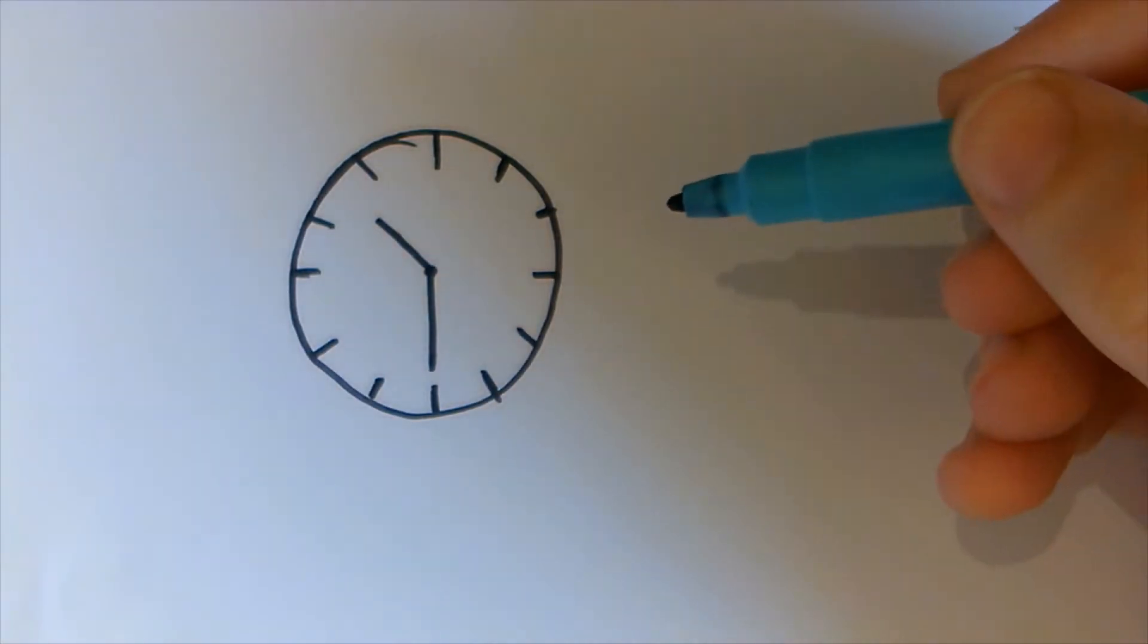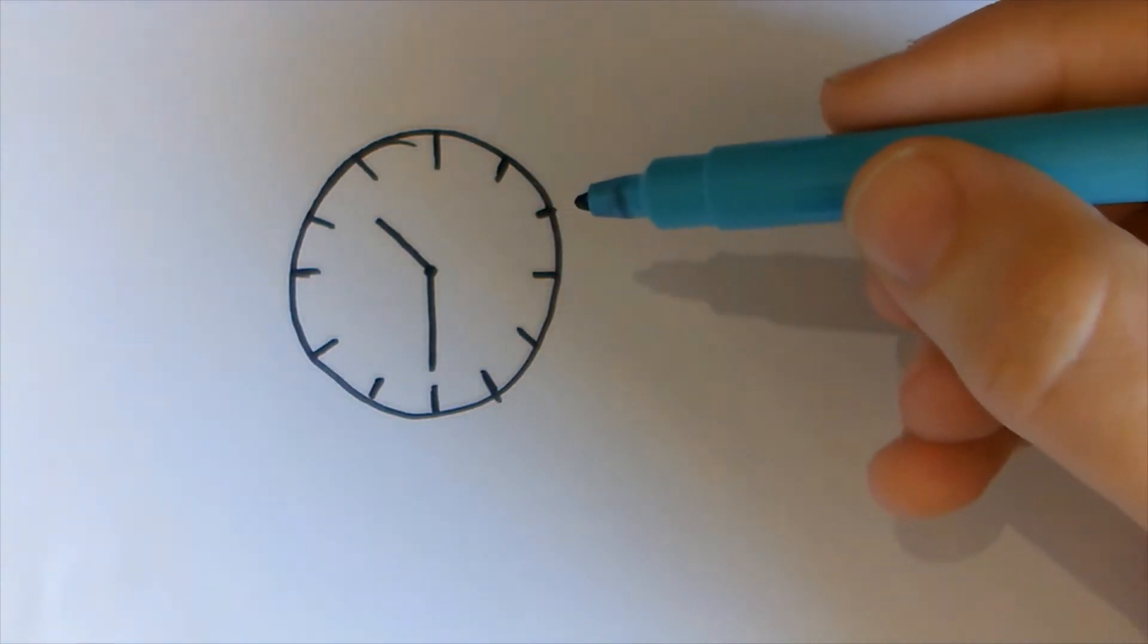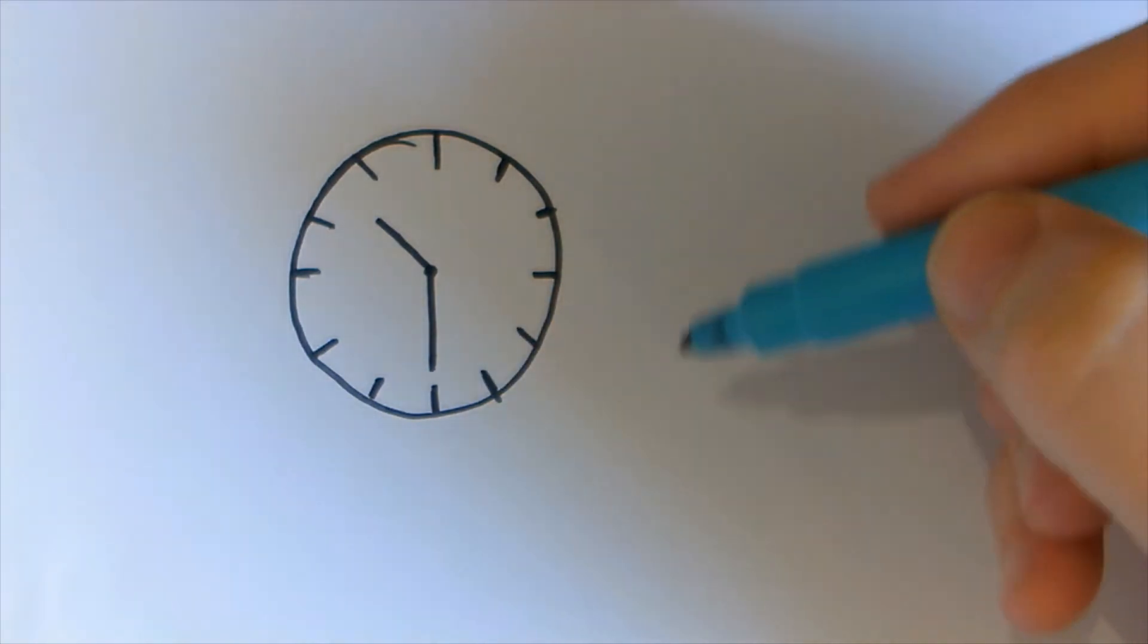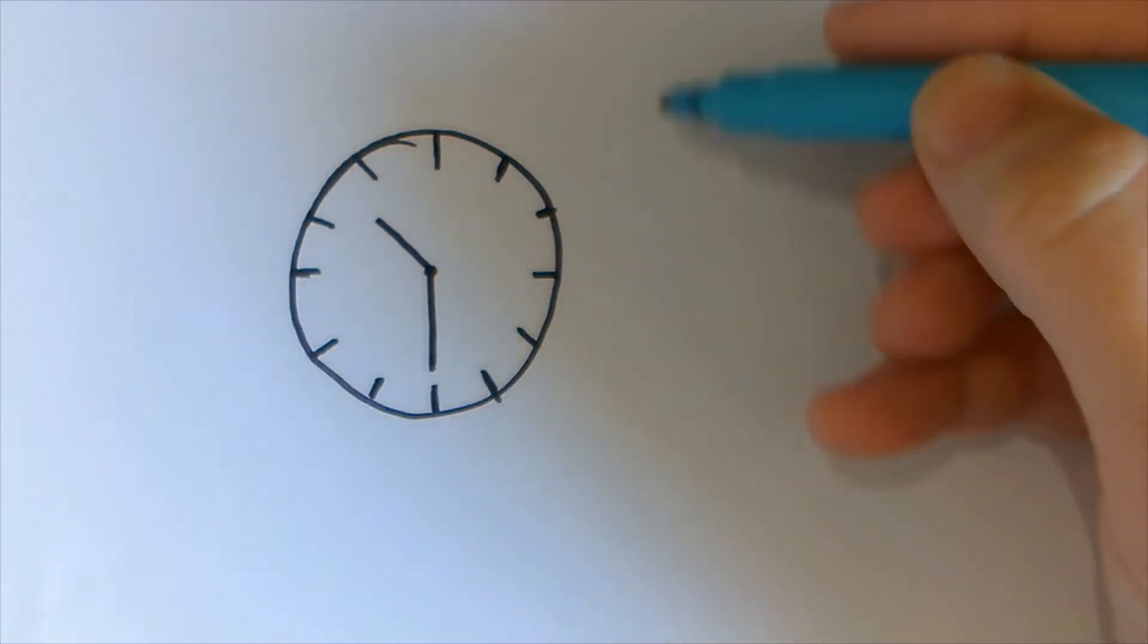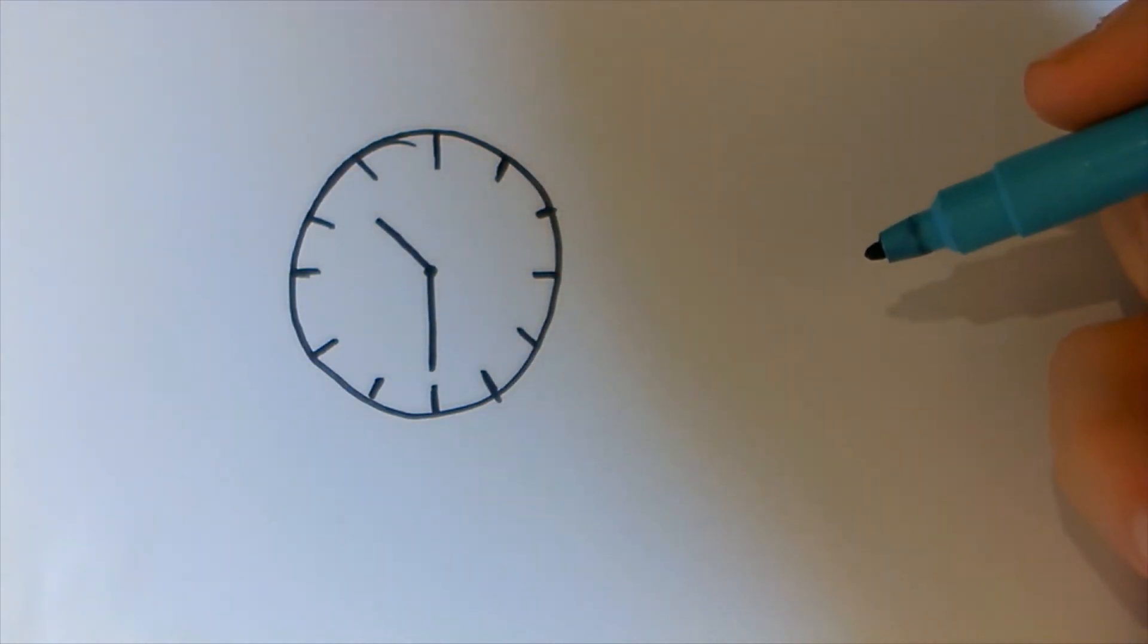Here's question two. Can you see the theme today? A wall clock with hour marks but no numbers shows the time at half past 10. If the clock is reflected in a vertical mirror, so I mean a mirror line here and reflected over, what time would it appear to show?